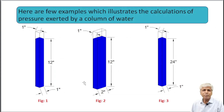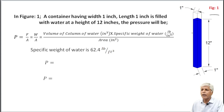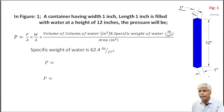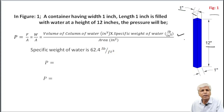Here are a few examples which illustrate the calculation of pressure exerted by the column of water. In Figure 1, a container having width 1 inch and length 1 inch is filled with water at a height of 12 inches. The pressure will be calculated through the same formula.